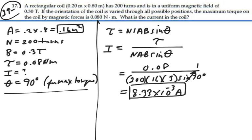So that is the current that's giving us maximum torque. 8.33 times 10 to the minus 3 amps, or we could say 8.33 milliamps is the current that we need.